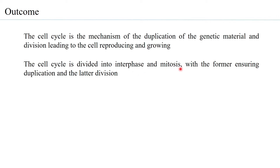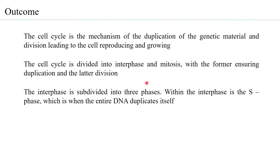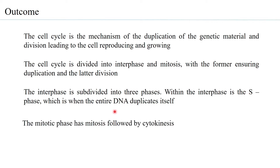and is divided into three phases. Within these is what is called the S phase. S stands for synthesis, and during the S phase the entire DNA duplicates itself. The mitotic phase has all the different steps of mitosis followed by cytokinesis. So effectively, the cell cycle has two phases: one is interphase and the other is the M phase.